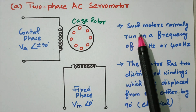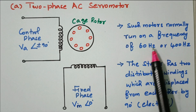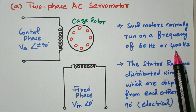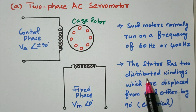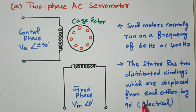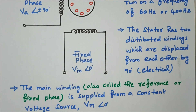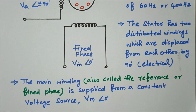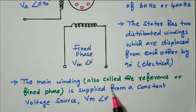The important condition is that the phase difference between the two phases — fixed phase and control phase — must be 90 degrees, then only we can use it for position control. Such a motor normally runs on a frequency of 60 Hz or 400 Hz. The stator has two distributed windings displaced from each other by 90 degrees. At 90 degrees there is no rotation; one winding is opposing the other, so any changes are reflected as speed control or position control — which is our requirement, as we do not need continuous rotation.